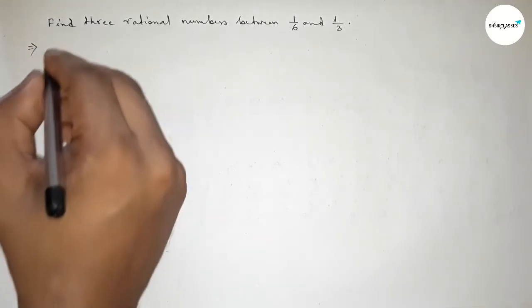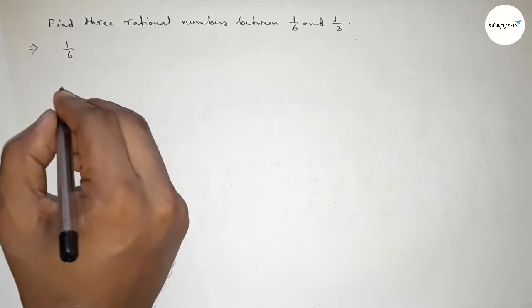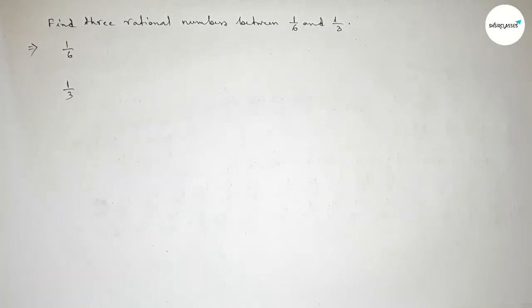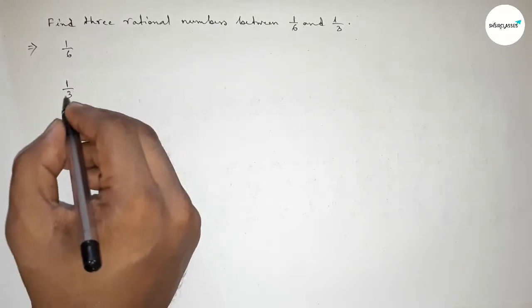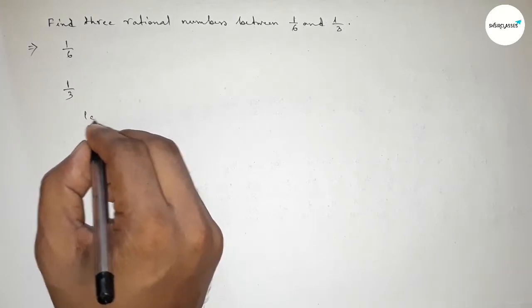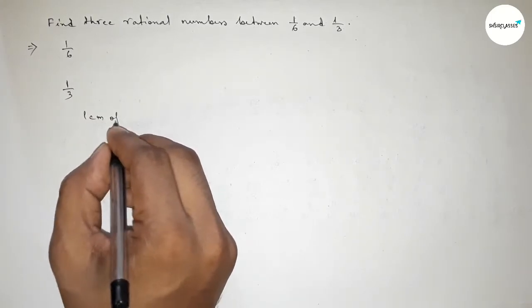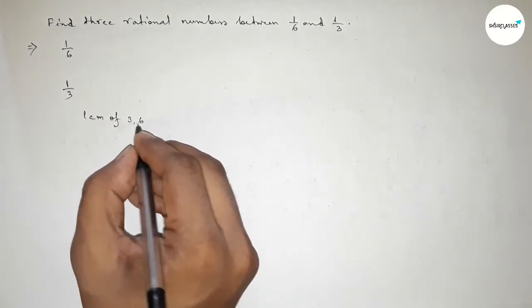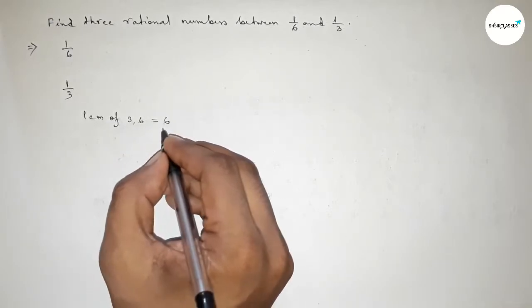Here given two numbers: 1 over 6 and 1 over 3. The denominators of both numbers are not the same, so first we have to make the denominators the same. Now finding the LCM of 3 and 6.